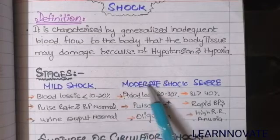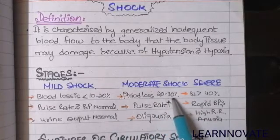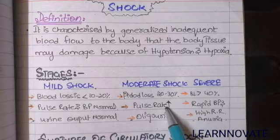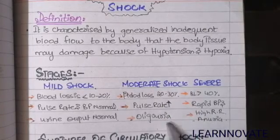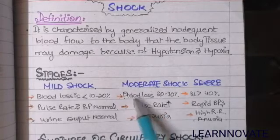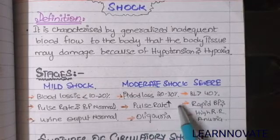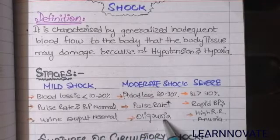In moderate shock, the condition becomes worsened. Blood loss increases to about 20 to 30 percent. The pulse rate increases because the heart pumps harder to compensate for decreased blood flow. There is also oliguria — decreased urine output — because there is decreased blood pressure and hypotension. To increase blood pressure, the kidneys retain fluid, so urine becomes concentrated and lower in volume, resulting in oliguria.